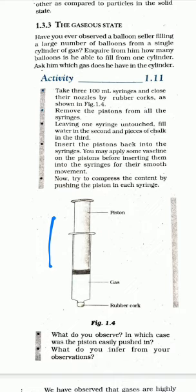You are going to take three syringes — without the needle, of course. Fit a rubber cork so that the nozzle gets closed. Remove the piston and fill the syringes: one with water, one with chalk powder, and leave the third syringe untouched. The untouched syringe will have air inside it.